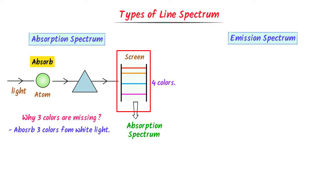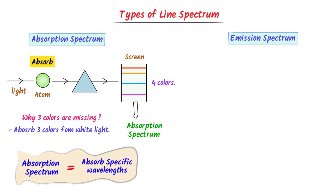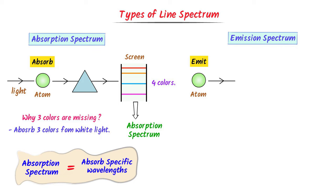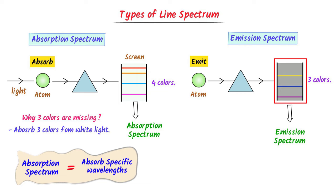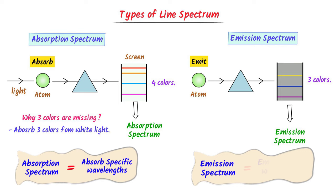Absorption spectrum is the one in which an atom absorbs specific colors or specific wavelengths. On the other hand, after some time this atom will cool down and emit all three colors it had absorbed from the white light. Passing these radiations through a prism and tracing them on screen, we get only three lines or three wavelengths on the black screen. We call this the emission spectrum because the atom emits specific colors or specific wavelengths.